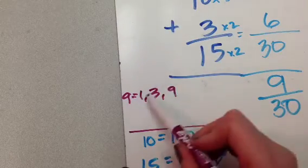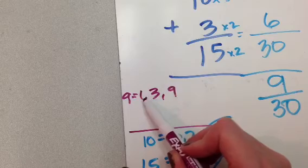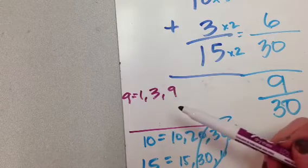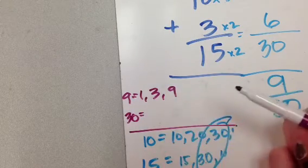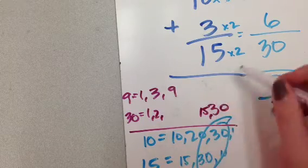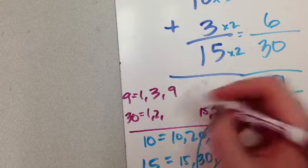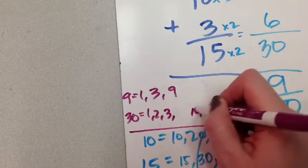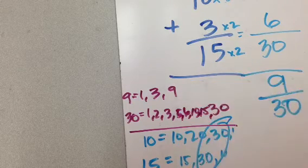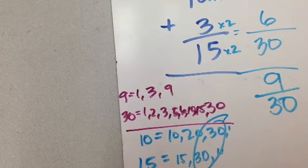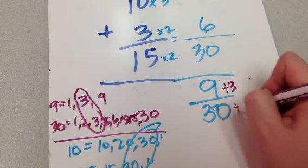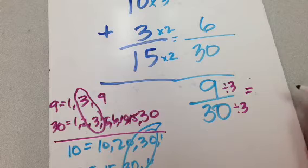The second question though is, is it reduced down as far as it can go? And in this case, it's not. So, I'm going to come over here and remember, reducing has to do with the factors. And finding the greatest common factor that can come out of both things. So, I'm going to write out the factors of nine. Nine times one is nine. One times nine is nine. Three times three is nine. Those are my only factors of nine.